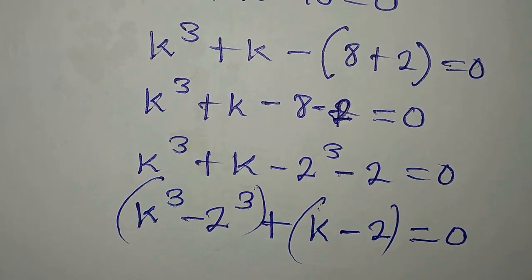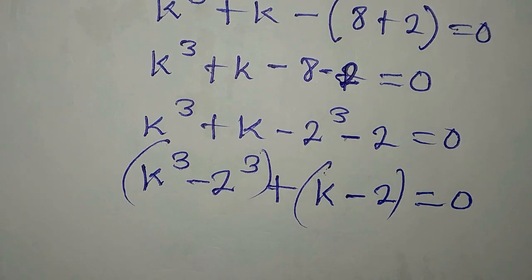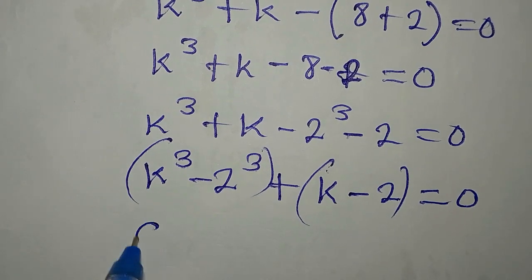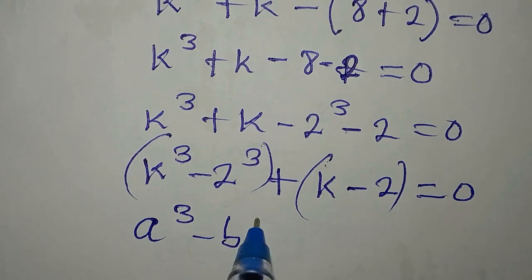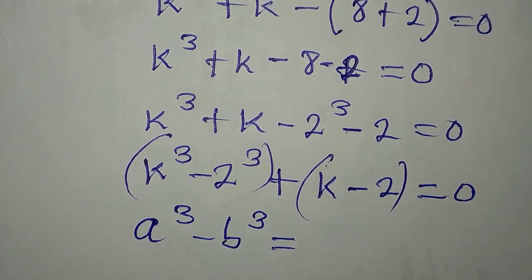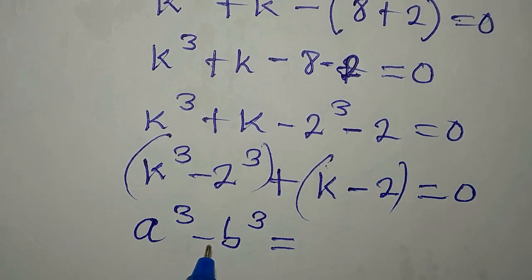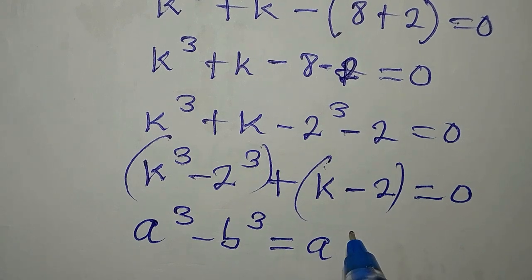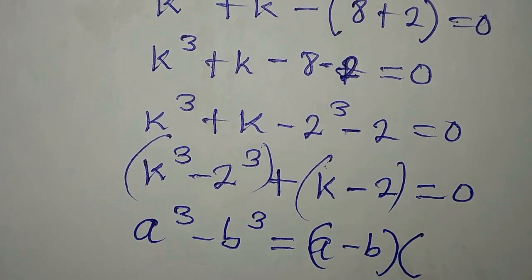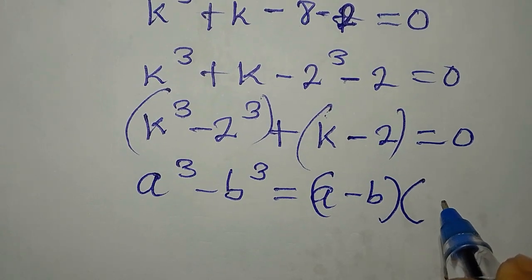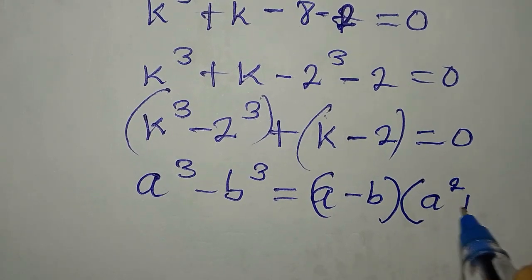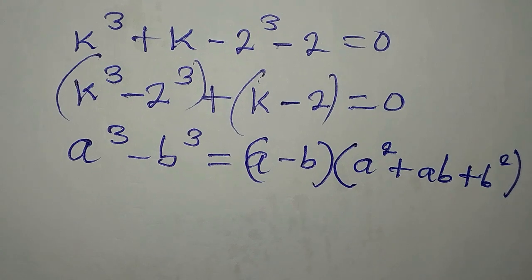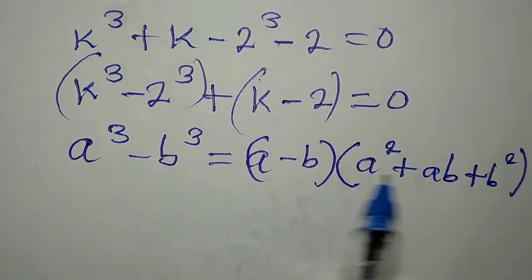We group into two parts: the first group and the second group, and deal with each one at a time. For the first group, if you have a to the power of 3 minus b to the power of 3 — this is called the difference of two cubes. You get a minus b, times open bracket a squared plus ab plus b squared.